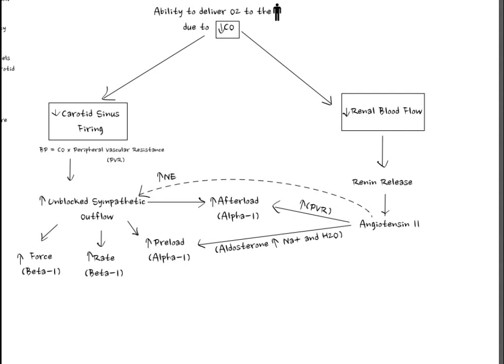Angiotensin 2 also increases norepinephrine levels, which further increases sympathetic outflow, increasing force, rate, preload, and afterload. Angiotensin 2 is also responsible for remodeling of the heart, when the heart's ventricles dilate to increase filling capacity in an effort to increase cardiac output — because the more blood the heart can take on, the greater the stroke volume. The last thing to mention is the negative feedback of angiotensin, which prevents renin release.